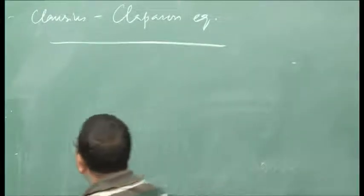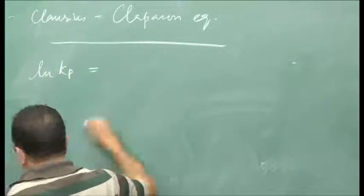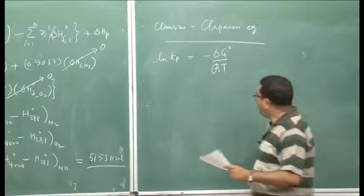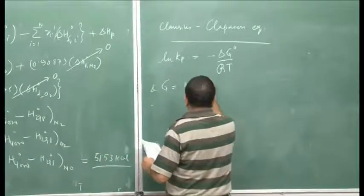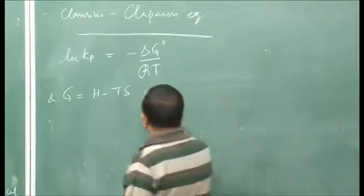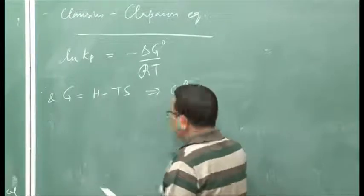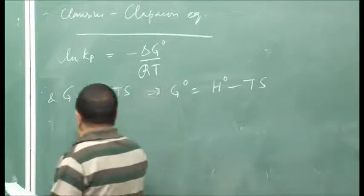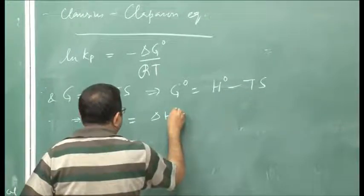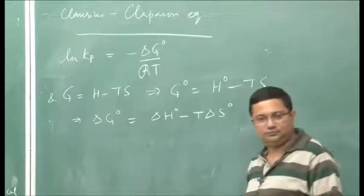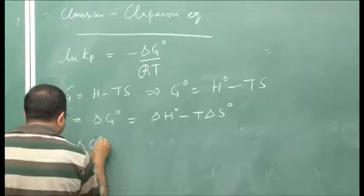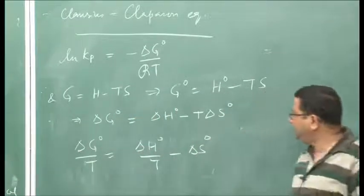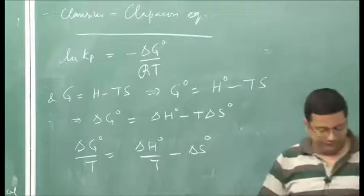We have already shown that ln Kp = −ΔG°/RT, and that Gibbs free energy G = H − TS. Therefore at standard pressure, ΔG° = ΔH° − T ΔS°. Thus ΔG°/T = ΔH°/T − ΔS°. Now let us differentiate ln Kp with respect to temperature: d(ln Kp)/dT = −(1/R) · d(ΔG°/T)/dT.